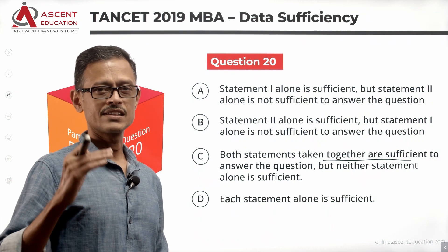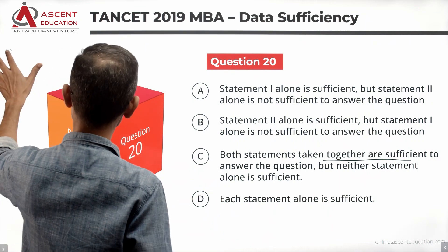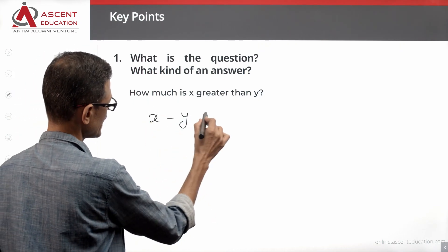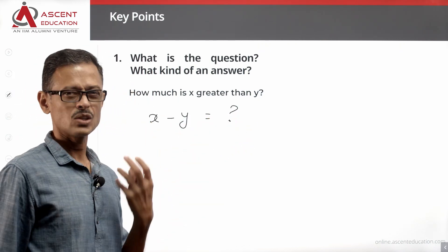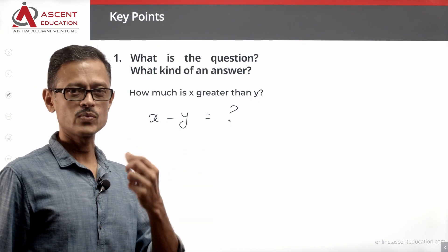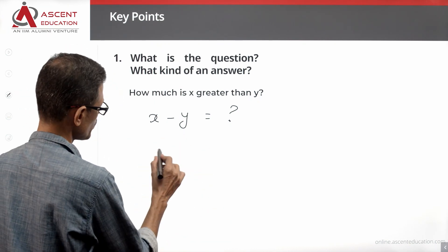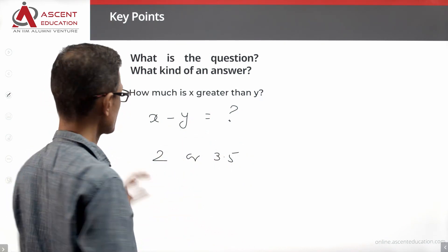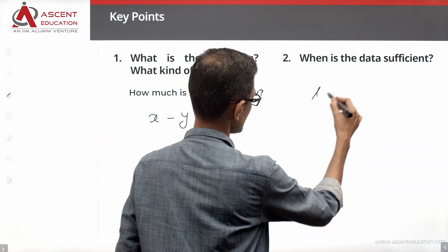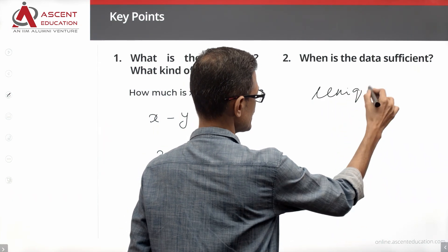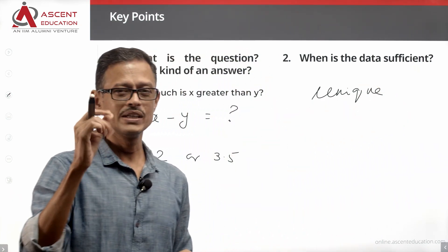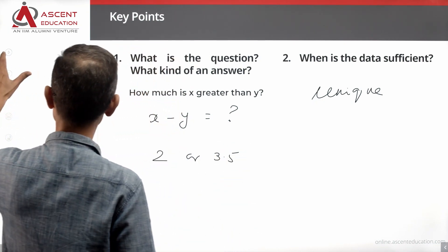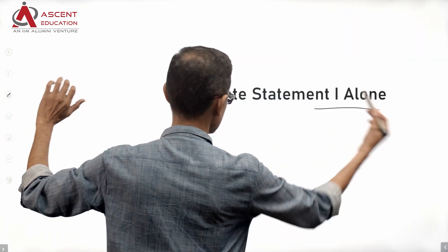Before we start with the statements, let's look at what the question is. The question is: how much is x greater than y? So we need to find x minus y as a specific value — for example 2, 3.5, or 5. The data is sufficient when we have one single unique value as the answer.